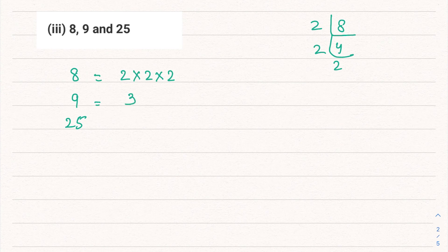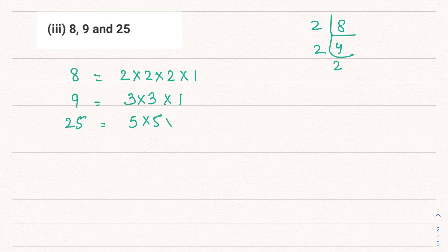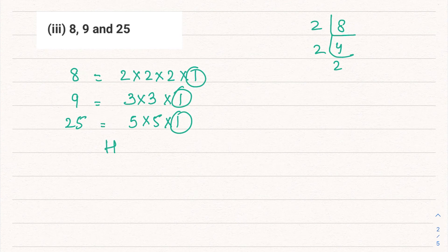9, you know, we can write as 3 × 3. And 25 is 5 × 5. We don't see any common factor here, but we also know that 1 is also a factor of every number. So in this case, 1 is going to be the highest common factor. So HCF is 1.